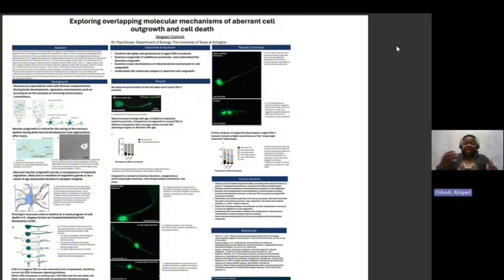I noticed that the percentage of persistence of the normal tail spike cell did decrease with time. So I looked at L4, and then L4 after 24 hours, and L4 after 48 hours, and I noticed that there was an increase in percentage of the outgrowth compared to the normal tail spike cell, which confirmed the persistence of tail spike cell and also confirmed that age is a factor here.